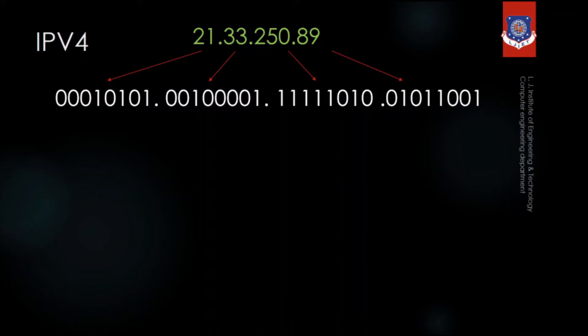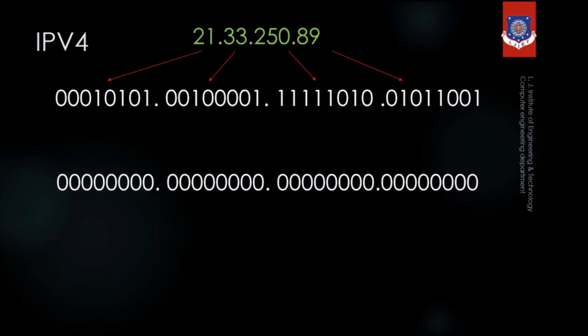Now suppose I want to find the range of the IPv4. To find the range I have to know the first address and the last address. To find the first address, I will set all 32 bits to 0. When converted to decimal you get 0.0.0.0, which is the first IP address in IPv4.